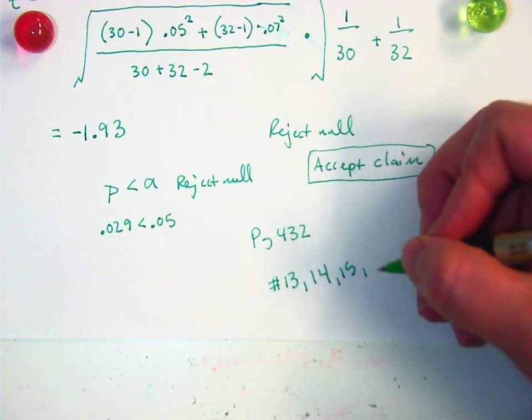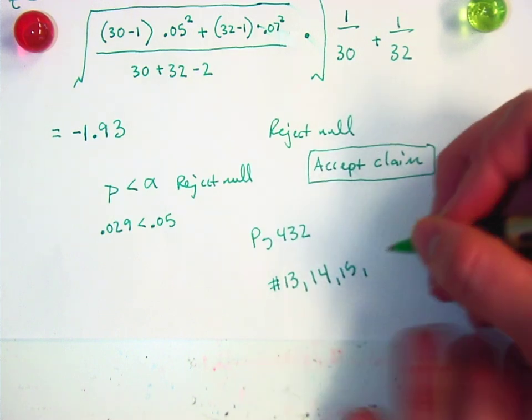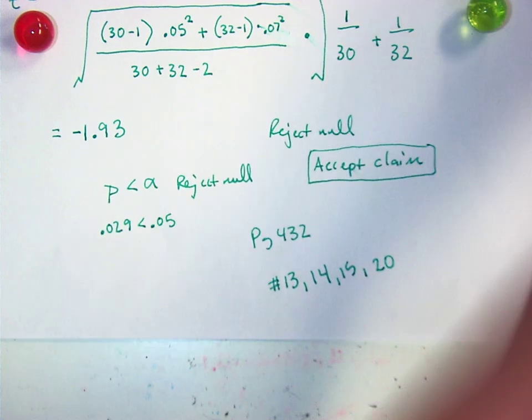And then I'm going to jump to number 20, which is not equal. Look at what number 20 looks like. 20 looks like this.